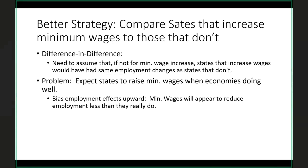The problem is that this is an improvement only if we can argue that changes in employment over time would be the same in California and Nevada if not for the minimum wage increase. But states generally don't increase their minimum wages at random — states are more likely to increase minimum wages during periods when they expect employment growth to be good. It's more politically feasible when people are less worried about employment. As a result, areas that increase their minimum wages would likely have had faster employment growth anyway, so beta-3 is going to be biased upward — we'll conclude the minimum wage has a less negative or more positive effect than it actually did.